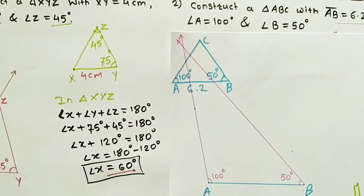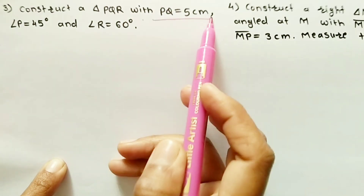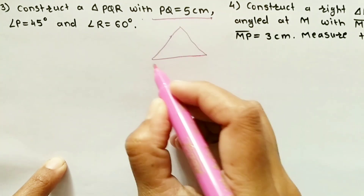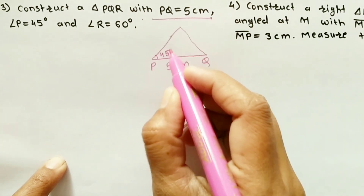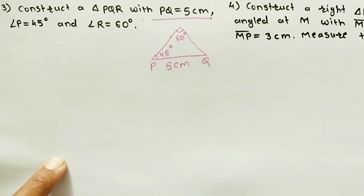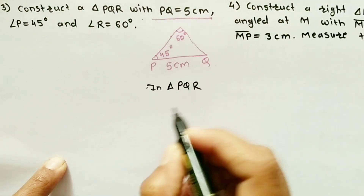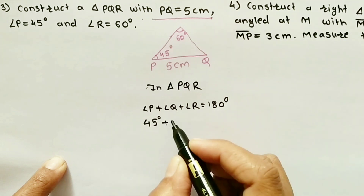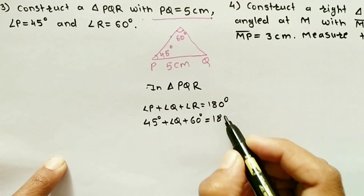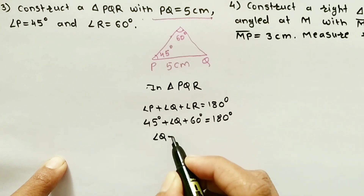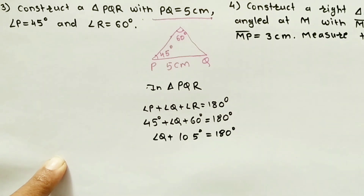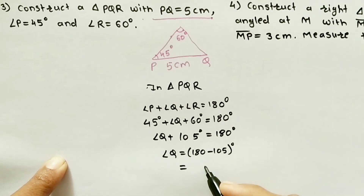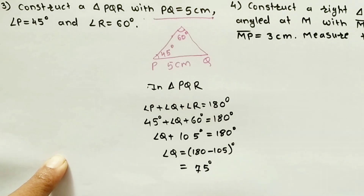The third question says: construct triangle PQR with PQ equal to 5 cm, angle P equal to 45 degrees, and angle R equal to 60 degrees. The base angle Q is not given, so we find it first. Using the angle sum property: angle P plus angle Q plus angle R equals 180 degrees. The sum of angle P and angle R is 105 degrees, so subtracting from 180, angle Q equals 75 degrees.